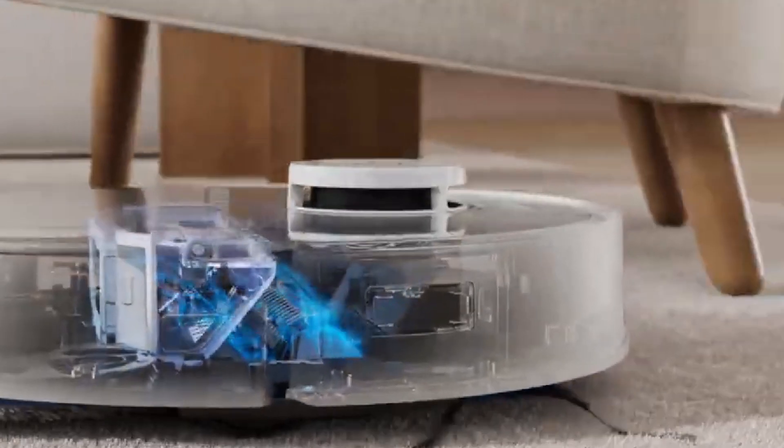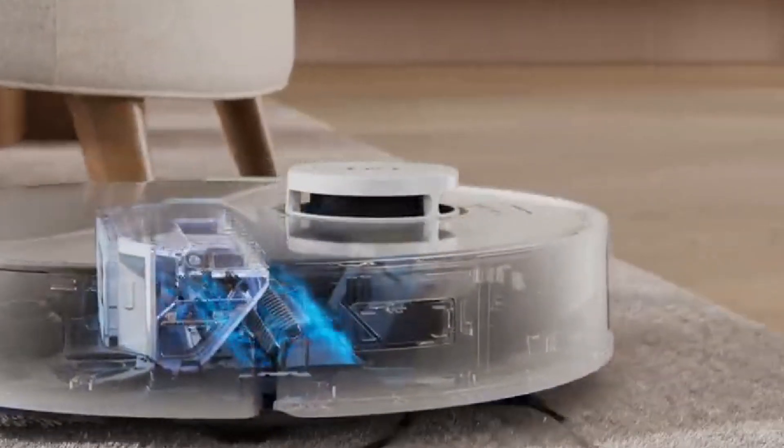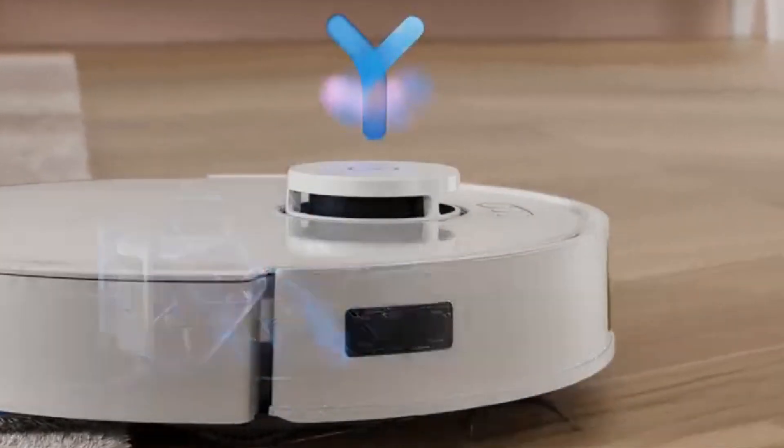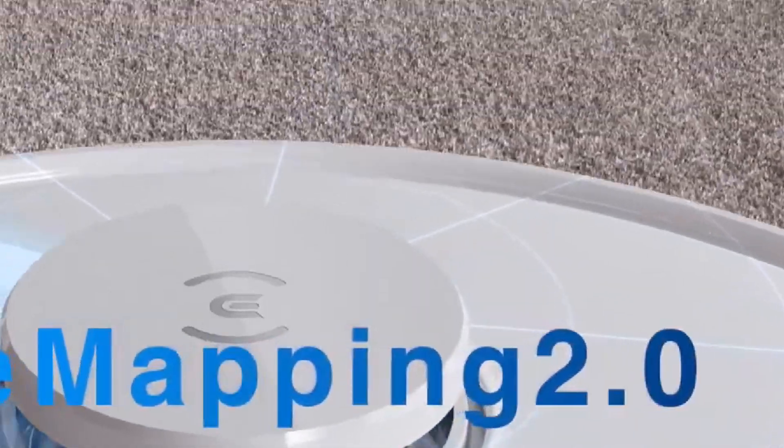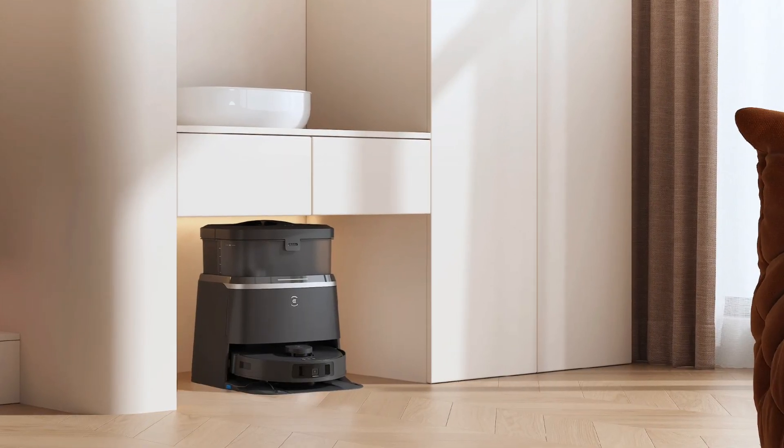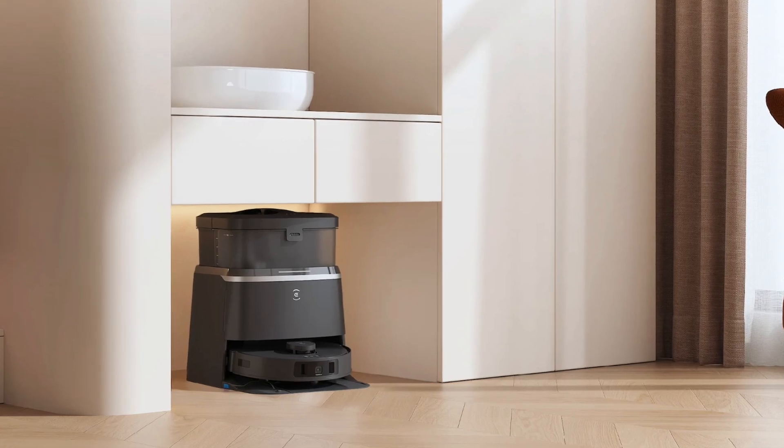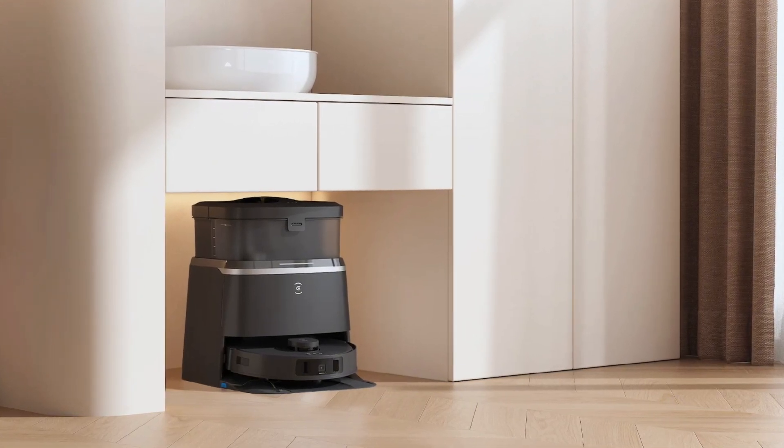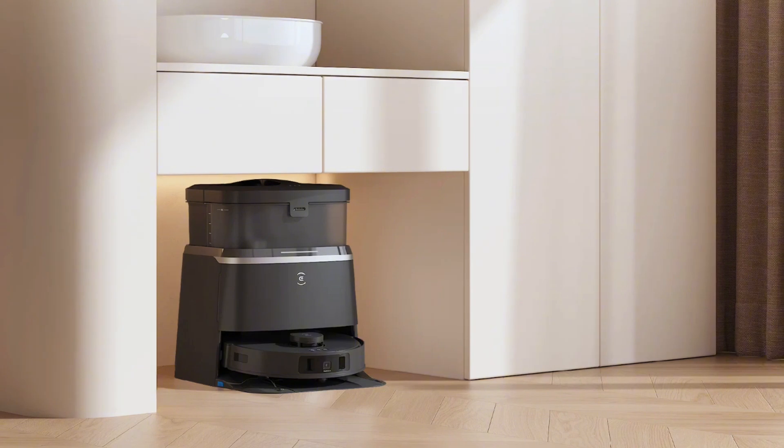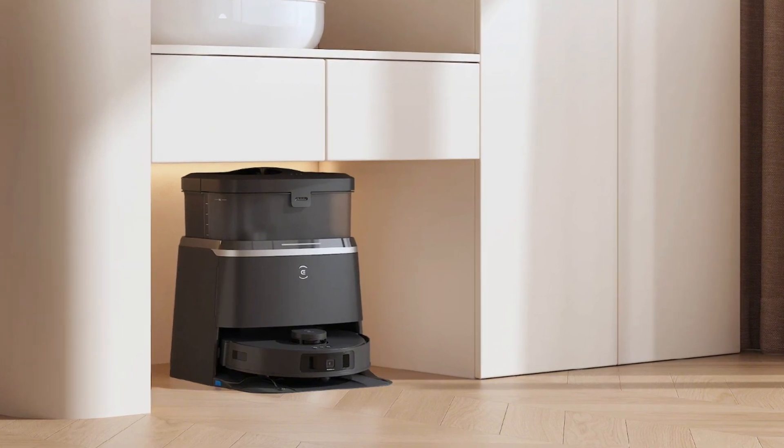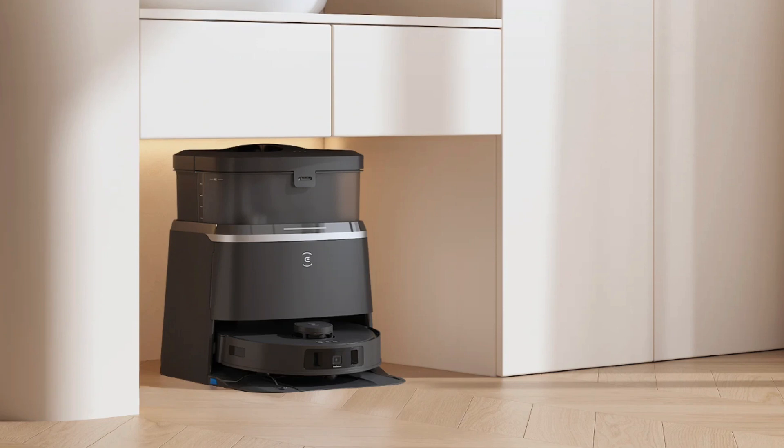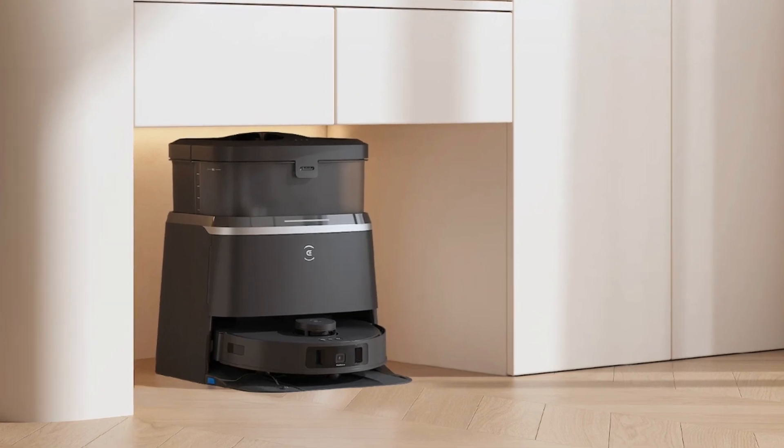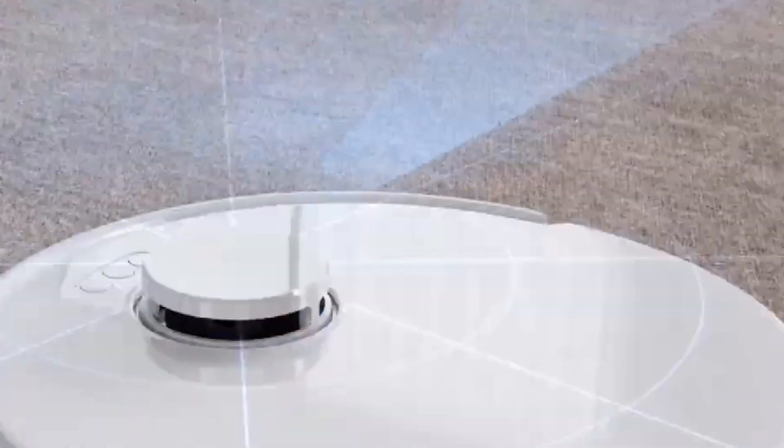The interface of the D-Bot T30 is designed for user-friendliness. It features a simple layout with a few tactile buttons on the top, which allows for straightforward operation. This intuitive control panel includes buttons for starting the vacuum, selecting cleaning modes, and returning it to its docking station. Additionally, a small LED display provides essential status updates, such as battery life and cleaning mode, making it easy to monitor its performance at a glance.